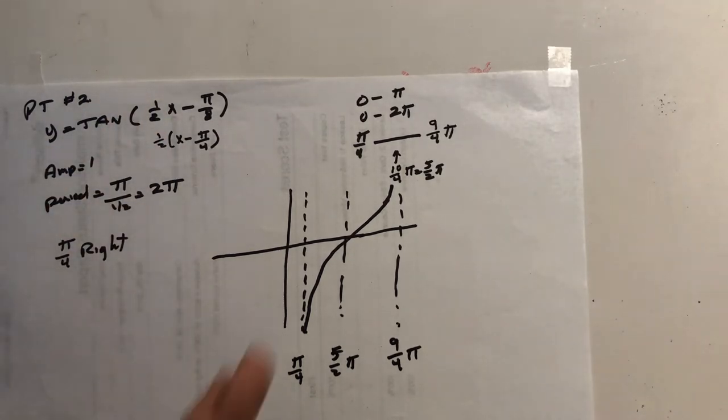It's a tangent, so we know it's going to curve up normally through the origin, except we've been shifted. Let's see here.